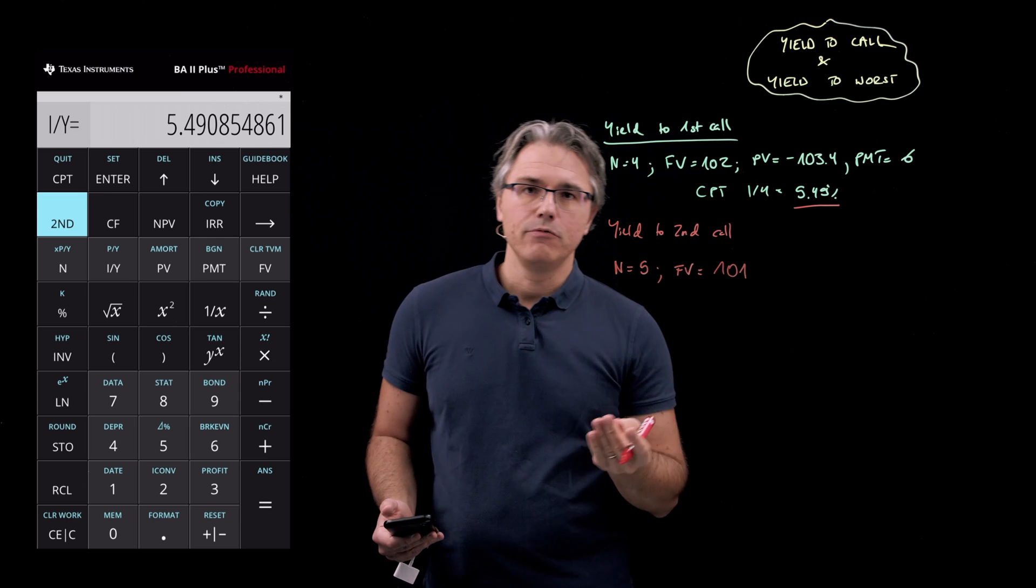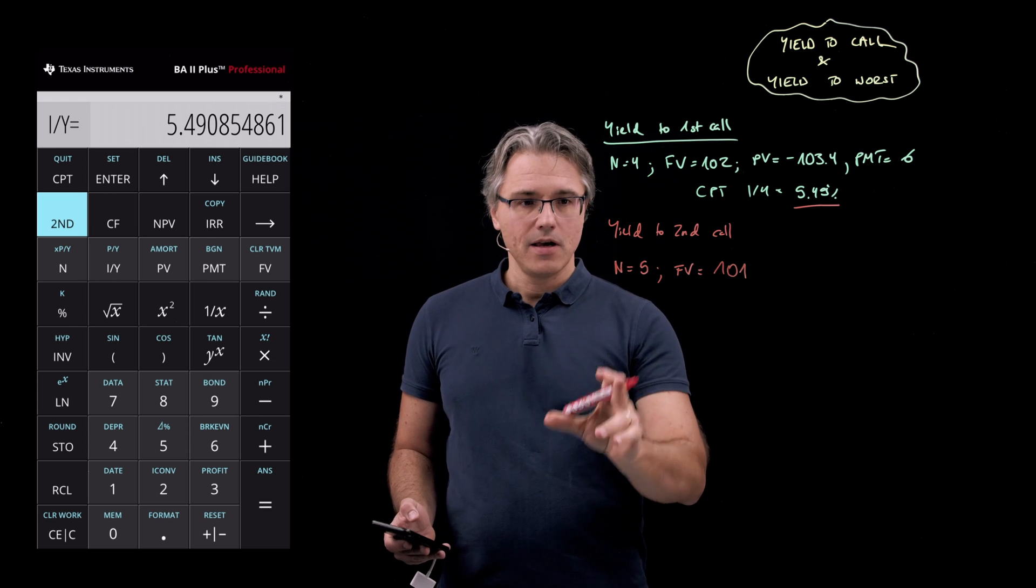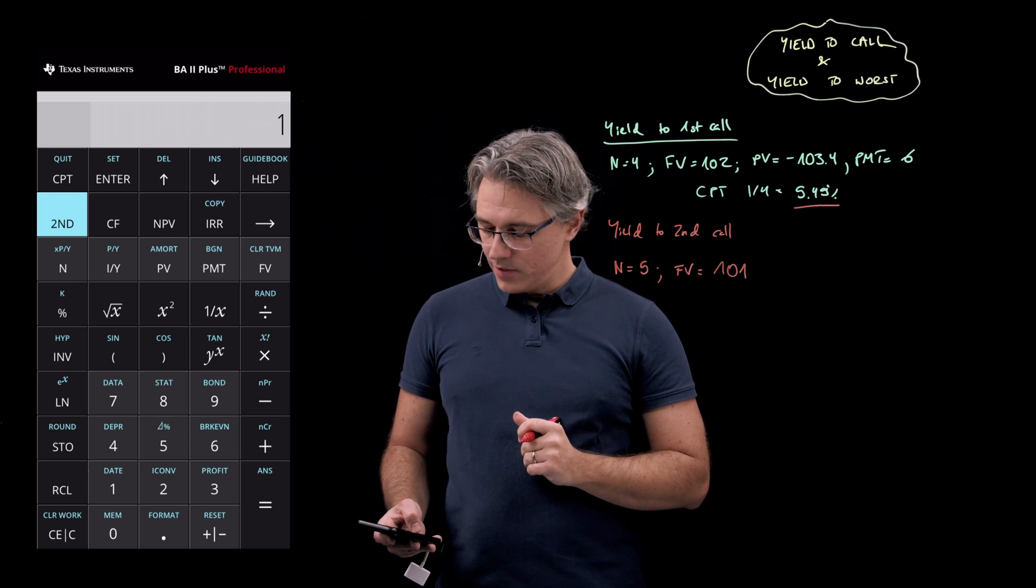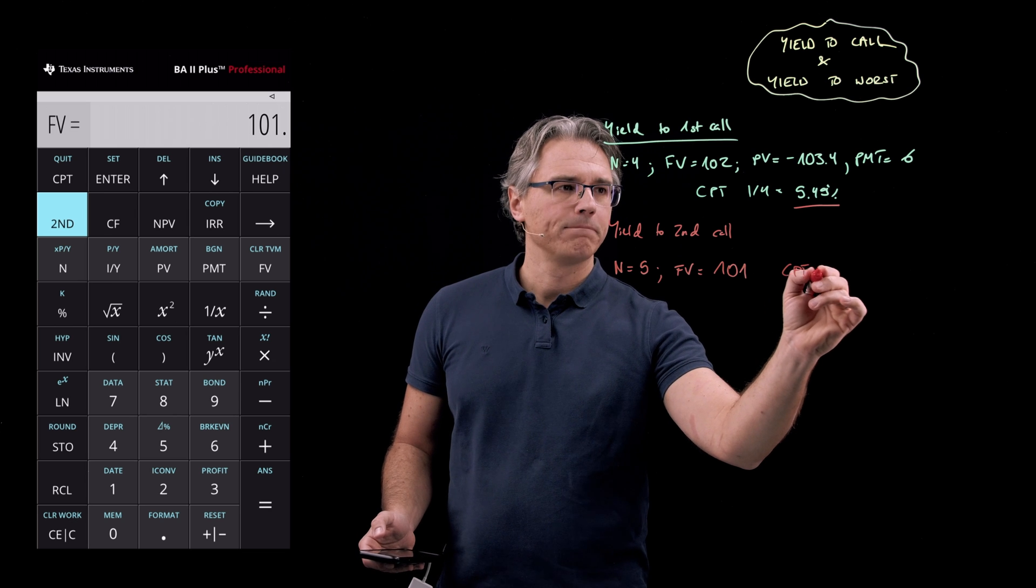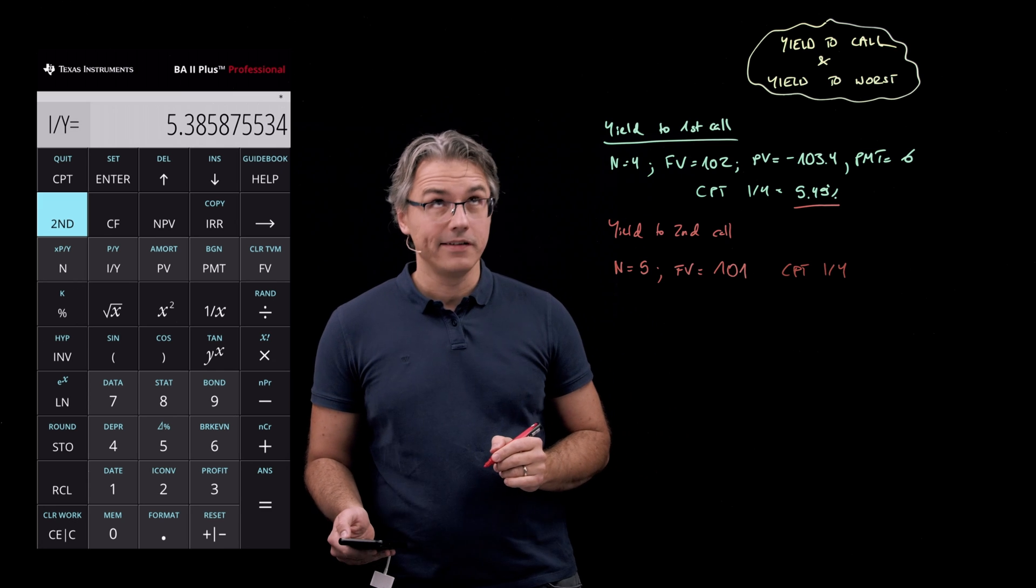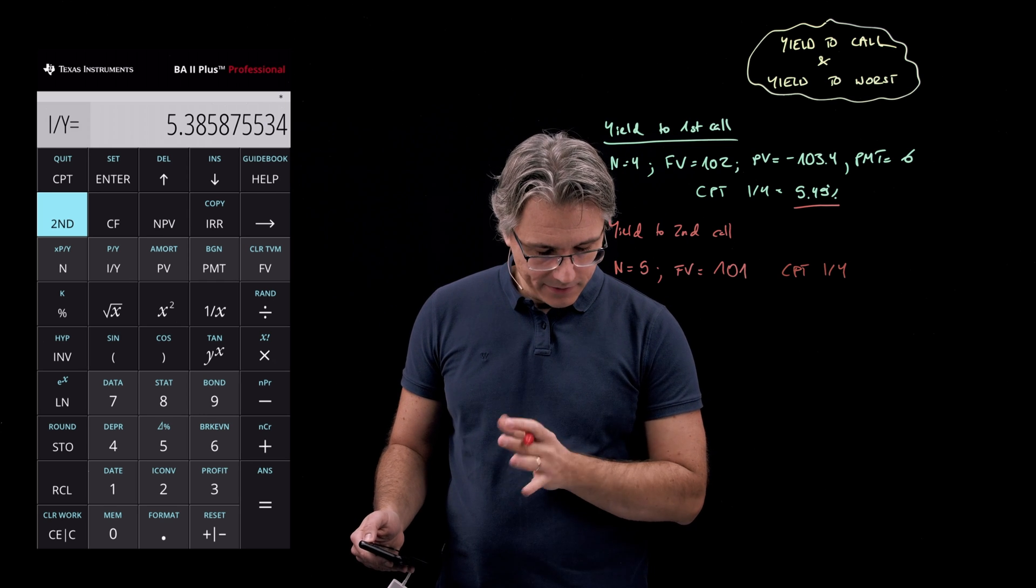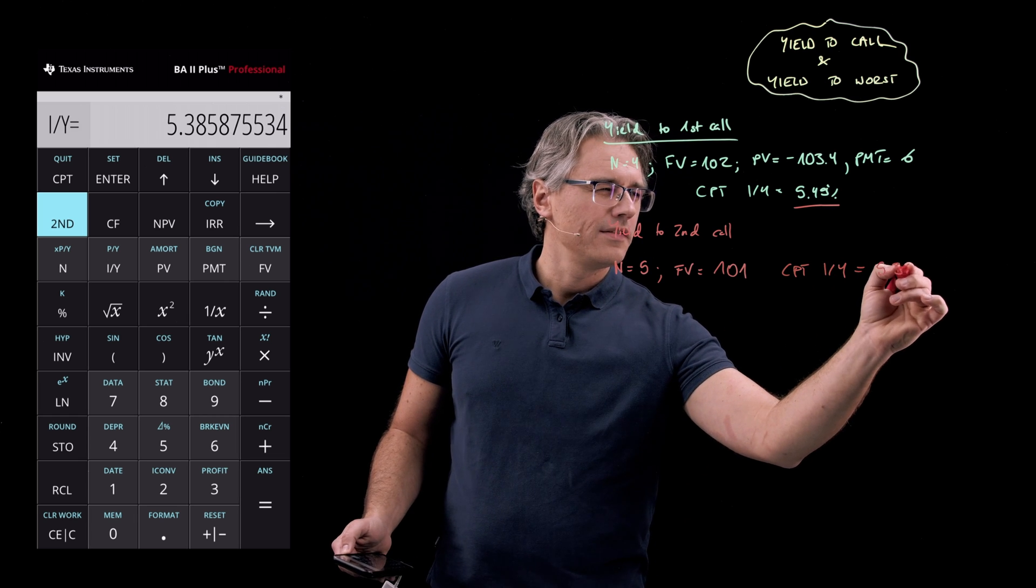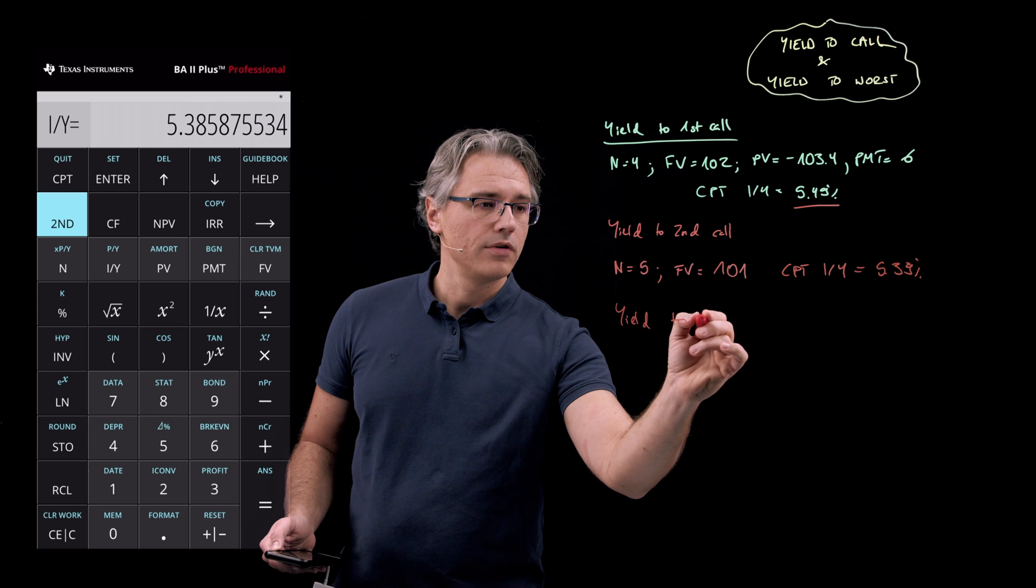With the time value of money worksheet on your Texas Instruments calculator, you can simply override the relevant inputs. So I'm going to have 5 for N and 101 positive for FV, and recompute my I over Y parameter, which is going to be my yield to maturity. And this brings or gives 5.385 roughly, so 5.39%.